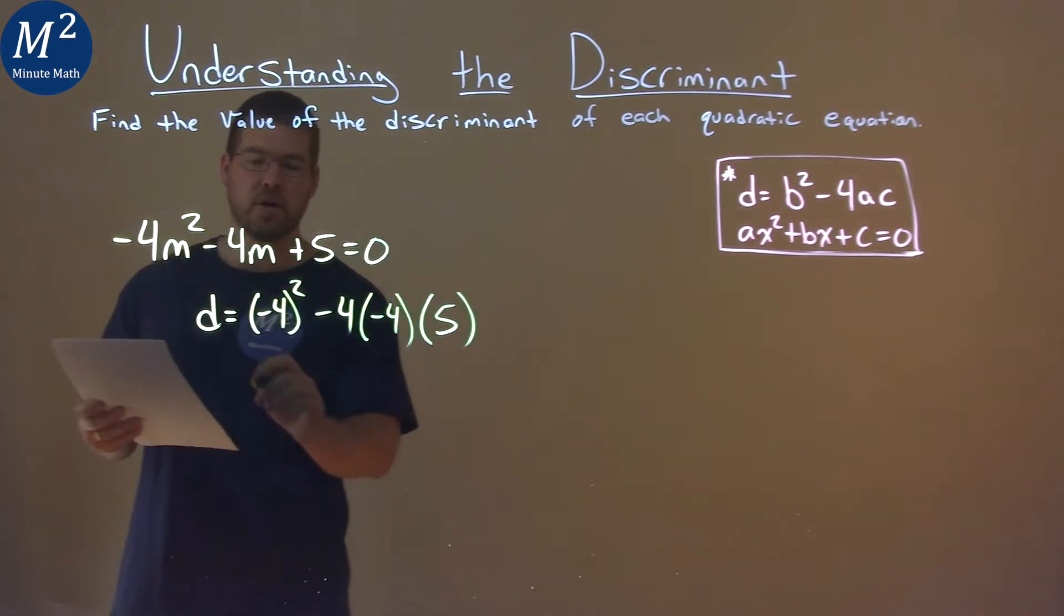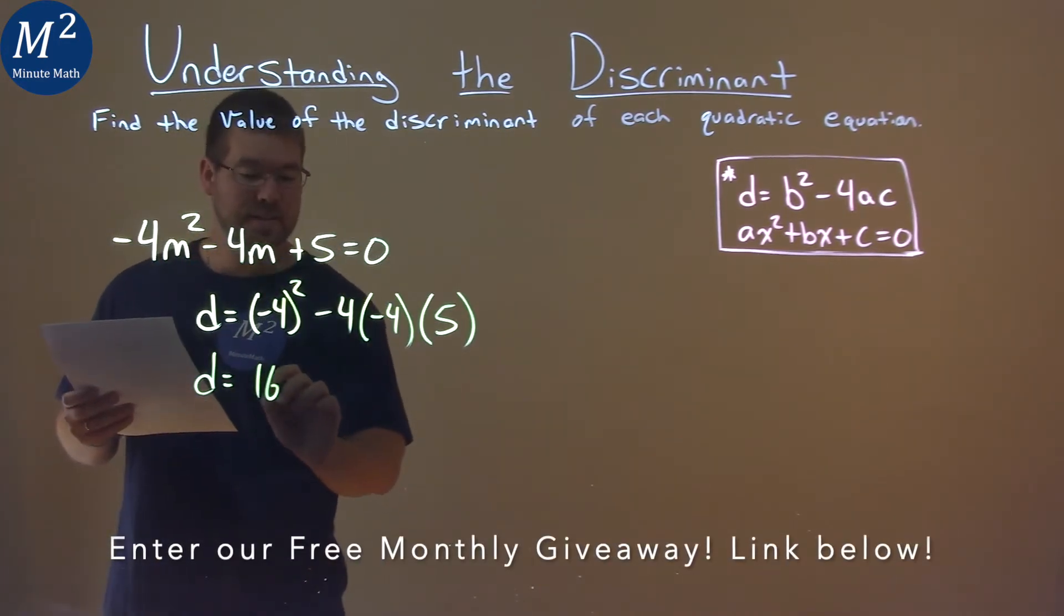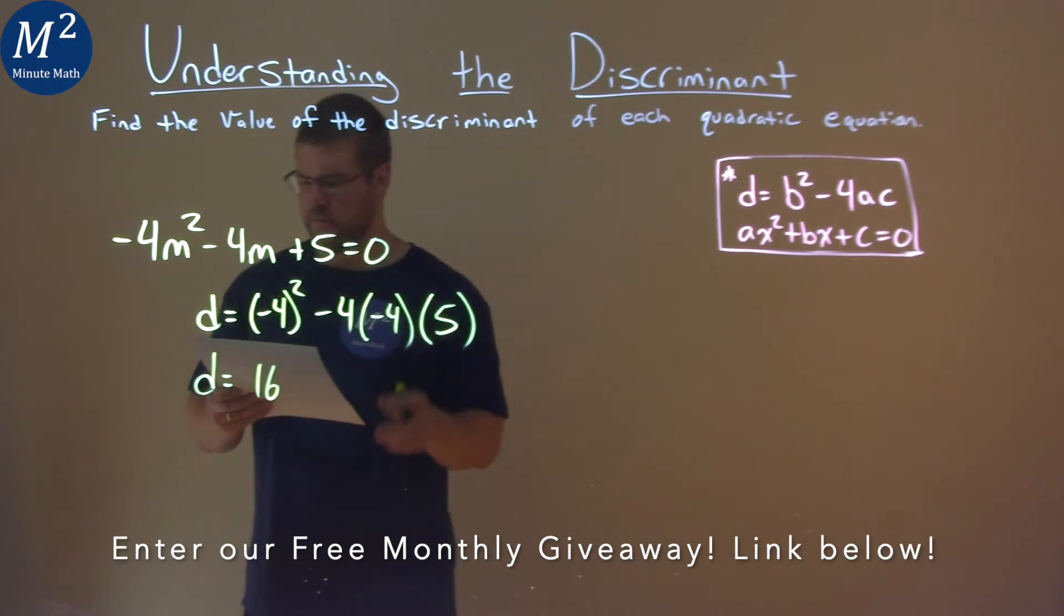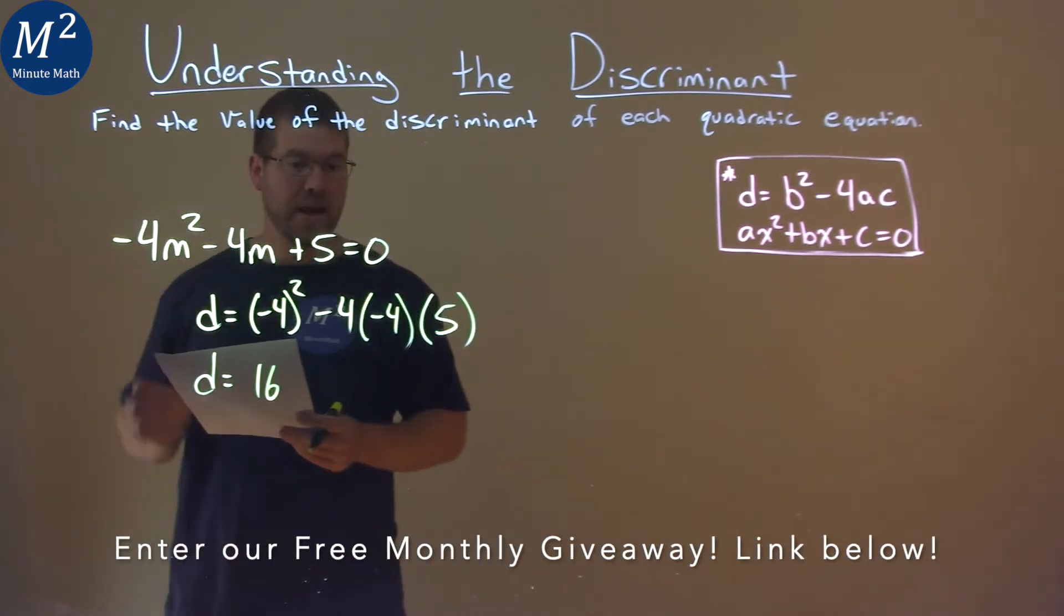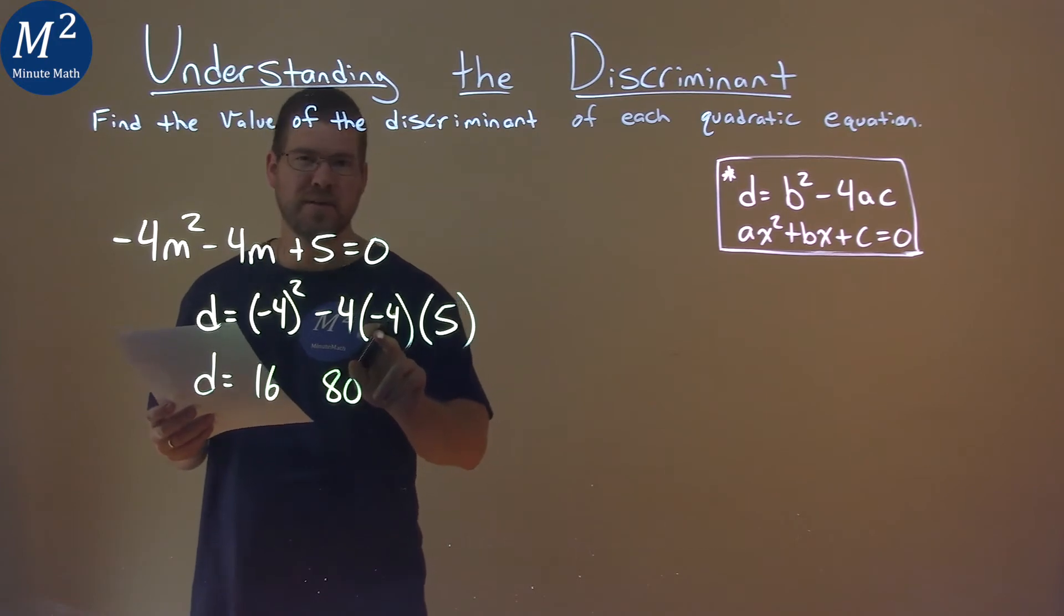And now we have to solve. Negative 4 squared is a positive 16, and then 4 times 4 times 5 is 80, and we have a negative times a negative, which makes it a positive.